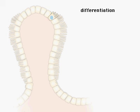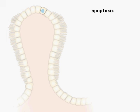At the tip of the villus, the cell undergoes programmed cell death, also called apoptosis, and is sloughed from the intestinal lining.